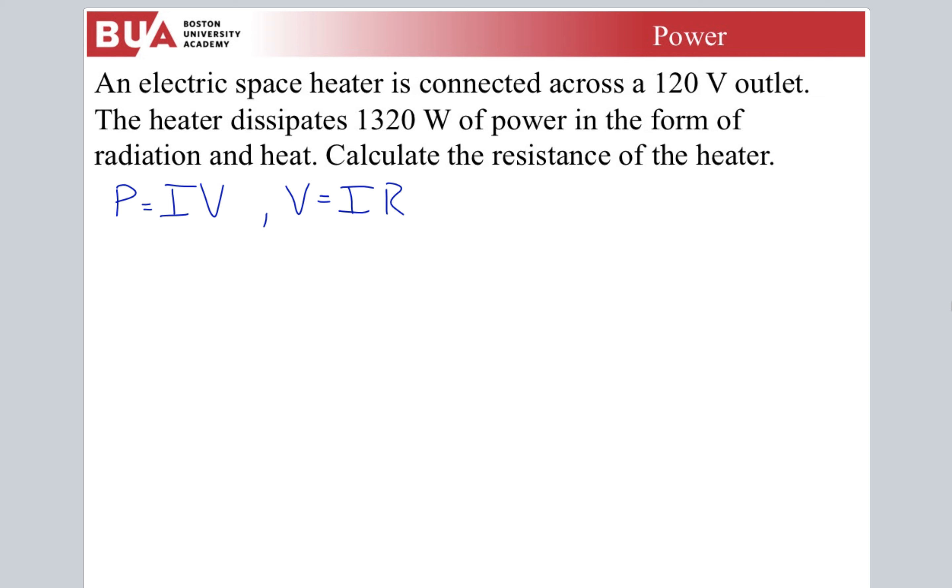First things first, I would write power IV, V equals IR. Those are my two equations. What do I know? I know power and I know voltage. We want to know resistance. I don't know anything about current. So I would solve this equation for I and plug it in over here. V squared over R is equal to P, or V squared over P is equal to R. So 120 volts squared.